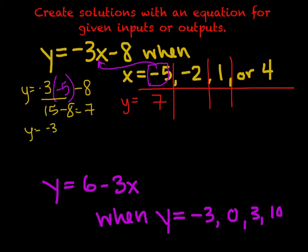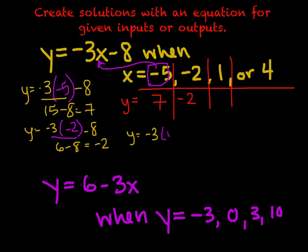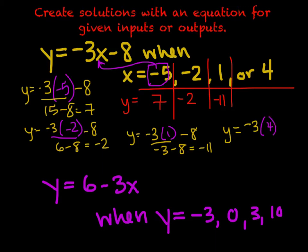Next, y = -3 times -2 minus 8. Negative 3 times negative 2 is positive 6, and 6 minus 8 gives us negative 2, so y = -2. Then y = -3 times 1 minus 8: negative 3 minus 8 equals negative 11, so y = -11. For our last one, y = -3 times 4 minus 8: negative 12 minus 8 equals negative 20, so y = -20.